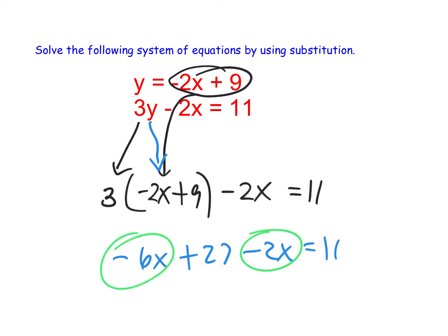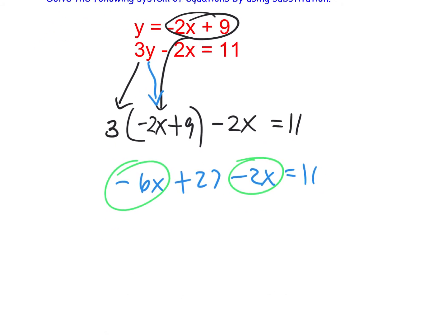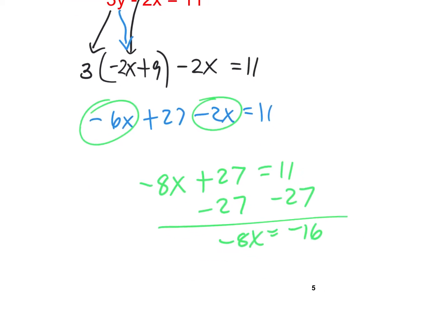Now, these go together. You're on a roll. What do you get? Negative 8x plus 27 equals 11 minus 27 on both sides. And you get negative 8x equals negative 16 divided by negative 8. And then that equals, so x equals 2. That's it. x equals 2.